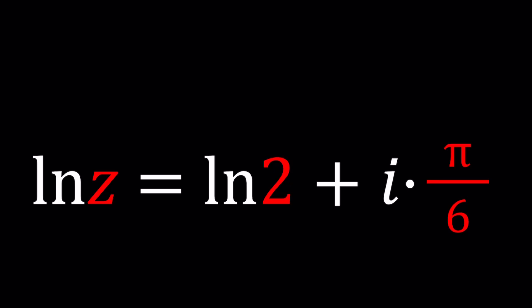Anyways, I would probably consider this a medium problem even though it kind of looks on the easier side. We have this equation ln(z) equals ln(2) plus i times π over 6.